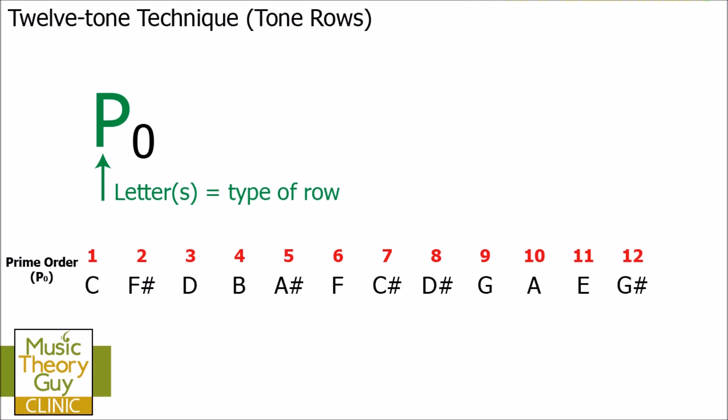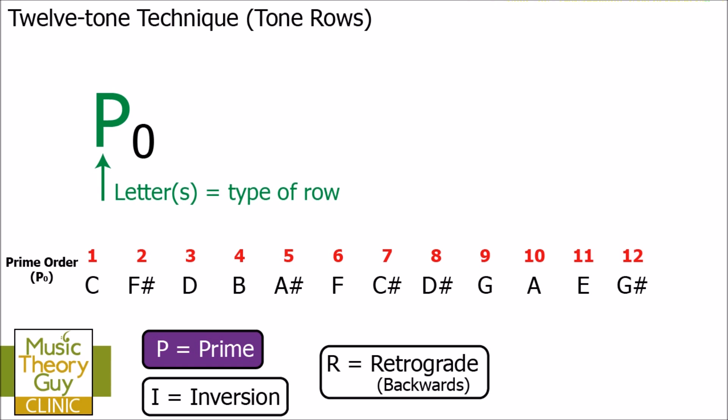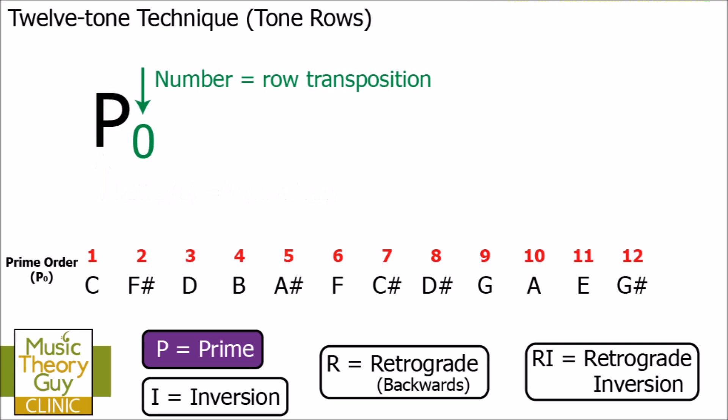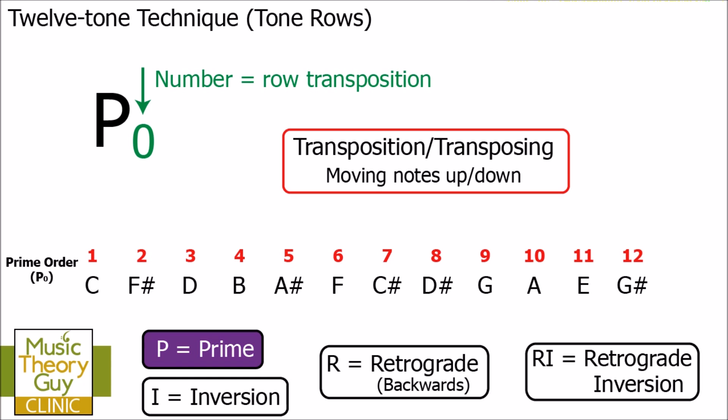So, the P itself, the letter, that refers to the type of row. Now, in serialism, there are four different letters that you can have. P refers to prime. And as you know, we've already got this prime order on the screen. And that's what we're going to be looking at in this video. But I'll come back to that in a moment. The letter could be an I for inversion, R for retrograde, which is a seemingly fancy word for backwards, and RI, which means retrograde inversion. Whereas the number, that refers to the row transposition. Now, transposition or transposing is a musician's term for moving notes up or down.